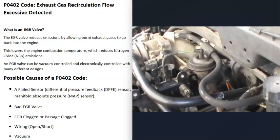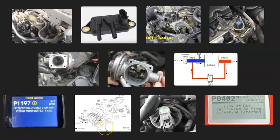The last thing on the list is a bad vacuum hose going to the EGR valve, which applies to older vehicles that use vacuum to control the EGR valve. Most newer vehicles are electronically controlled, but for older vehicles you can check the hose going to the EGR valve — make sure it has vacuum, hasn't come off, and isn't clogged.